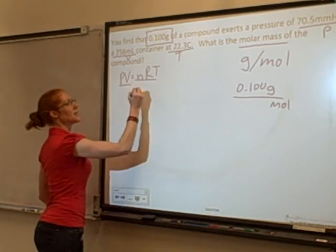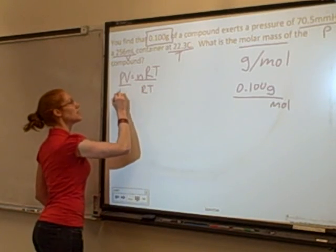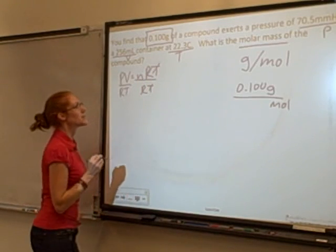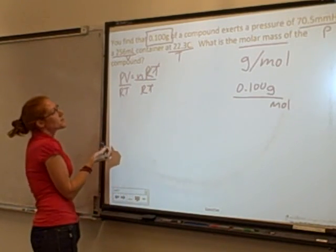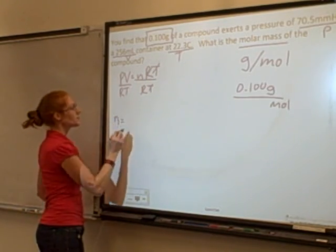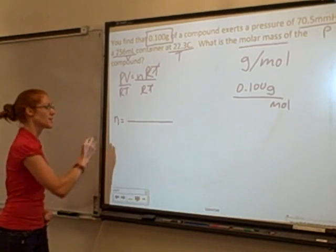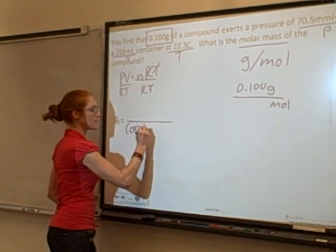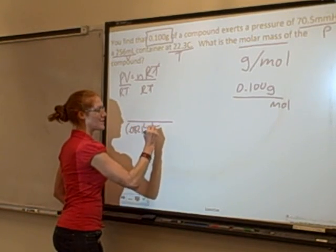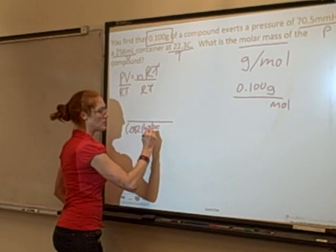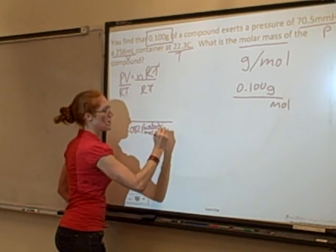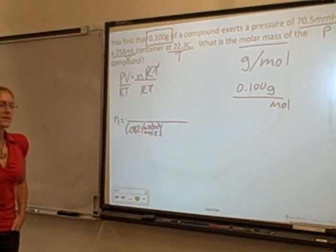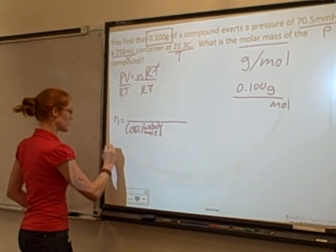Let's go ahead and get the moles alone, so divide by RT on both sides. R divided by R is 1, T divided by T. Okay, so the N is going to equal the pressure times the volume divided by the gas constant, 0.0821 liters atmospheres per mole Kelvin, and times temperature. But I didn't give you any of the units correctly, so we have to do some conversions.